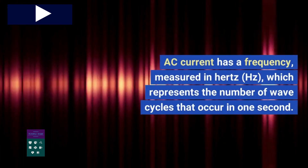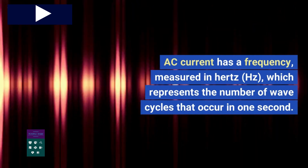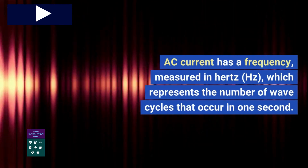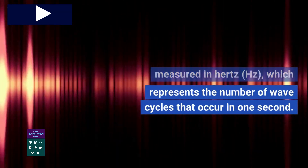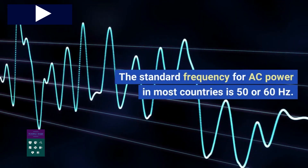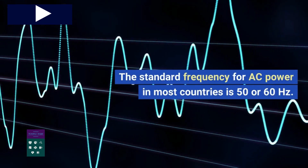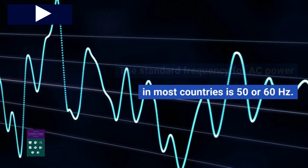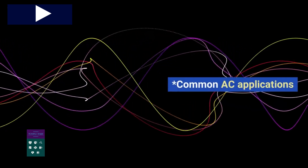AC current has a frequency, measured in hertz (Hz), which represents the number of wave cycles that occur in one second. The standard frequency for AC power in most countries is 50 or 60 hertz.